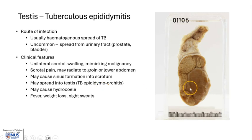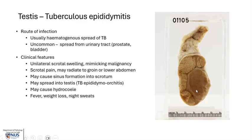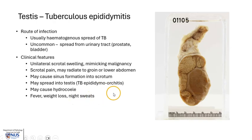The infection, if untreated, may spread into the testicular parenchyma, giving rise to TB epididymo-orchitis. There may also be associated hydrocele, and systemic symptoms such as fever, weight loss, and night sweats.